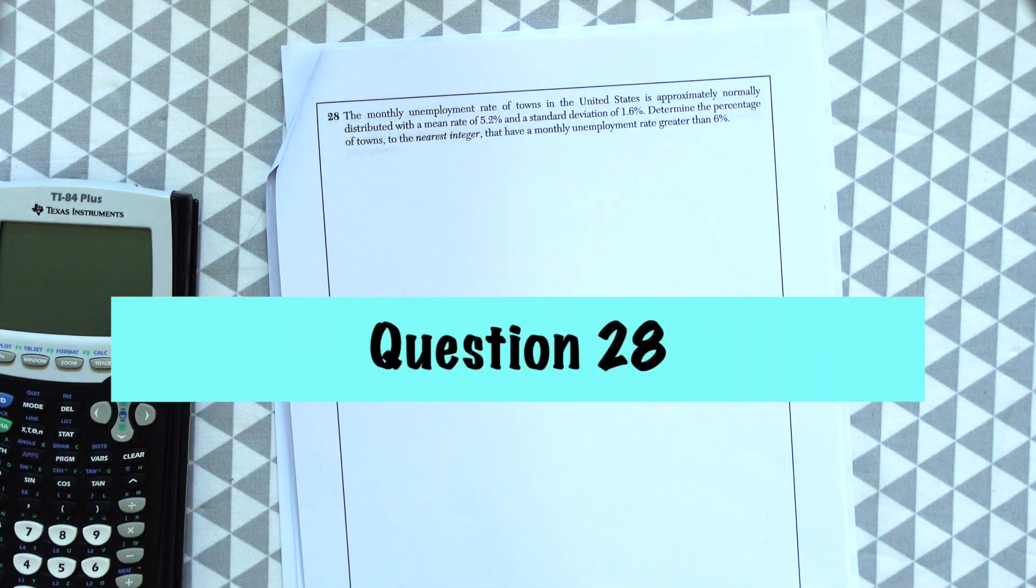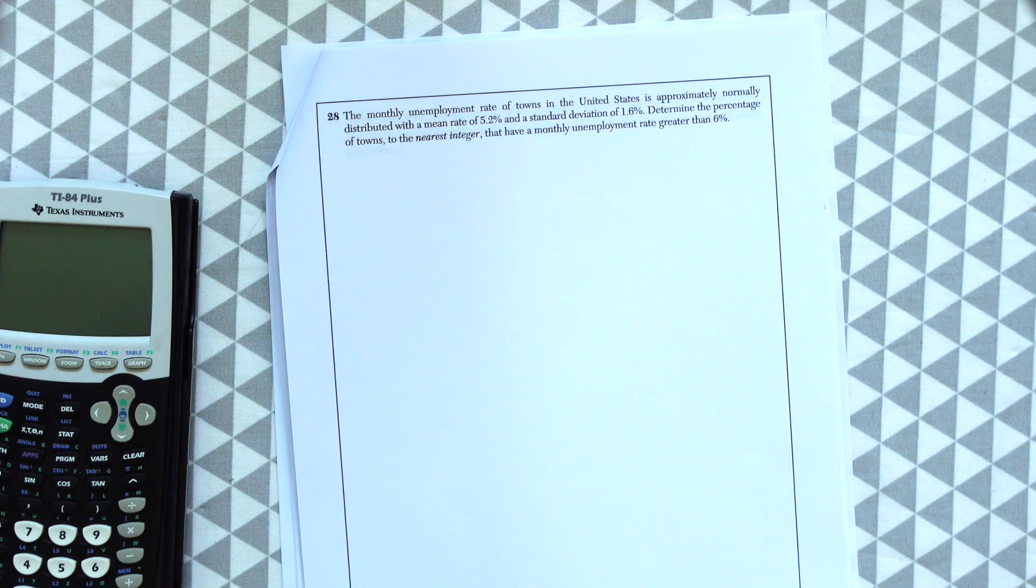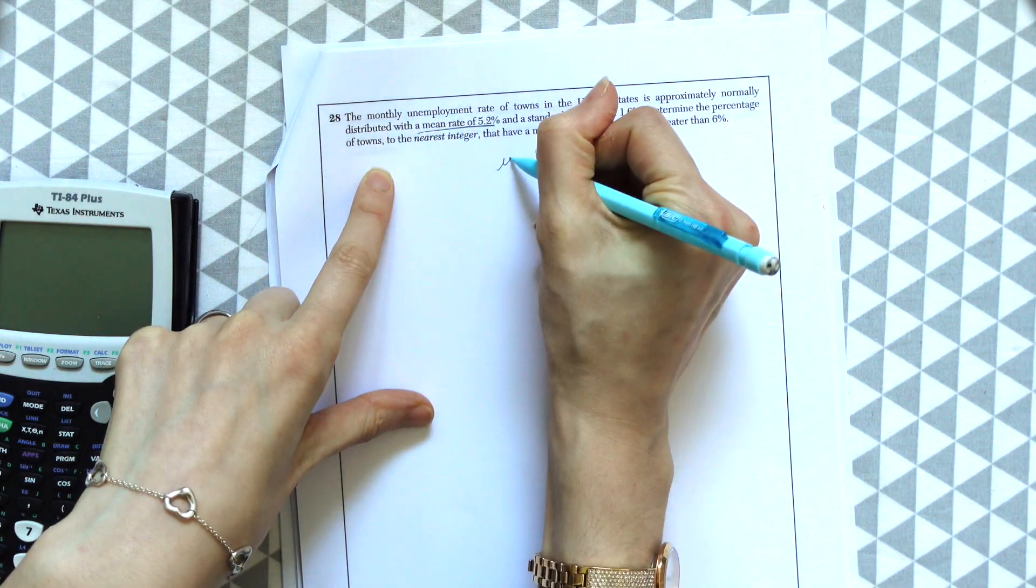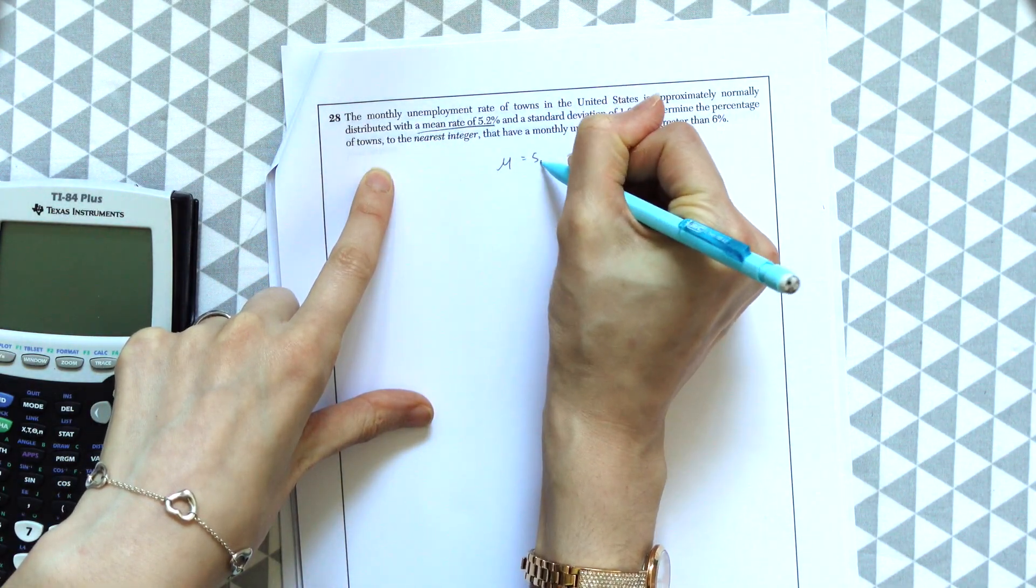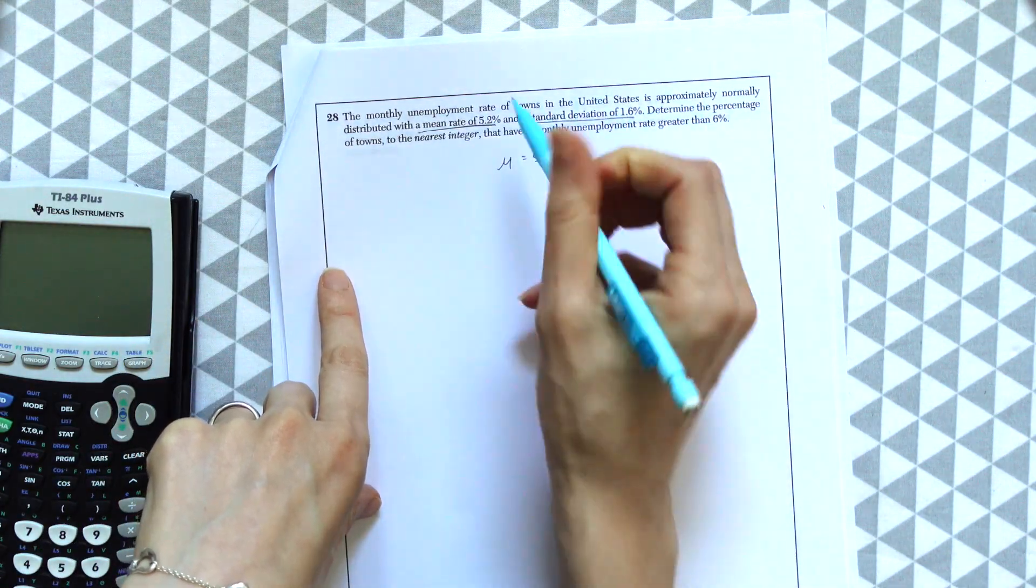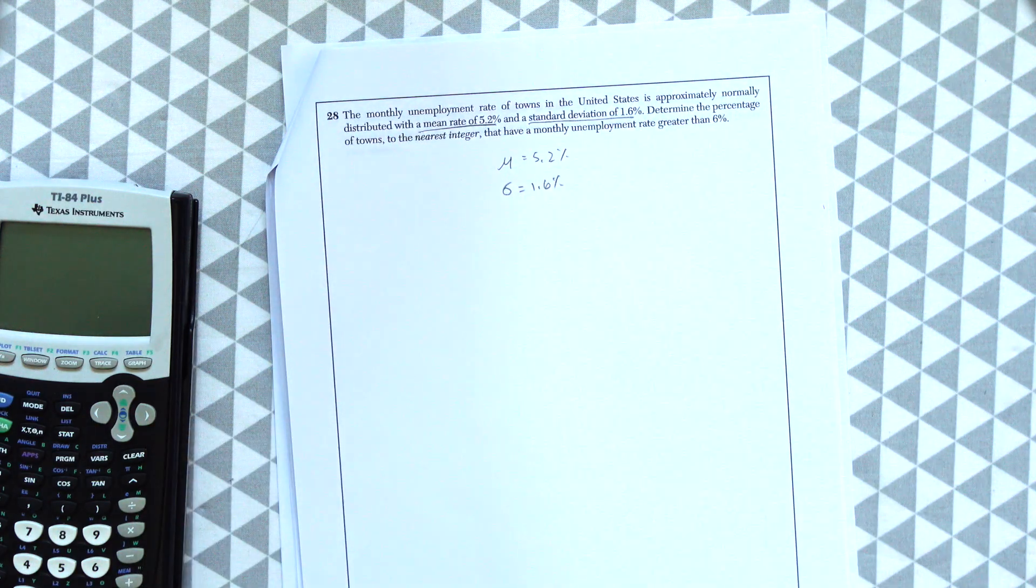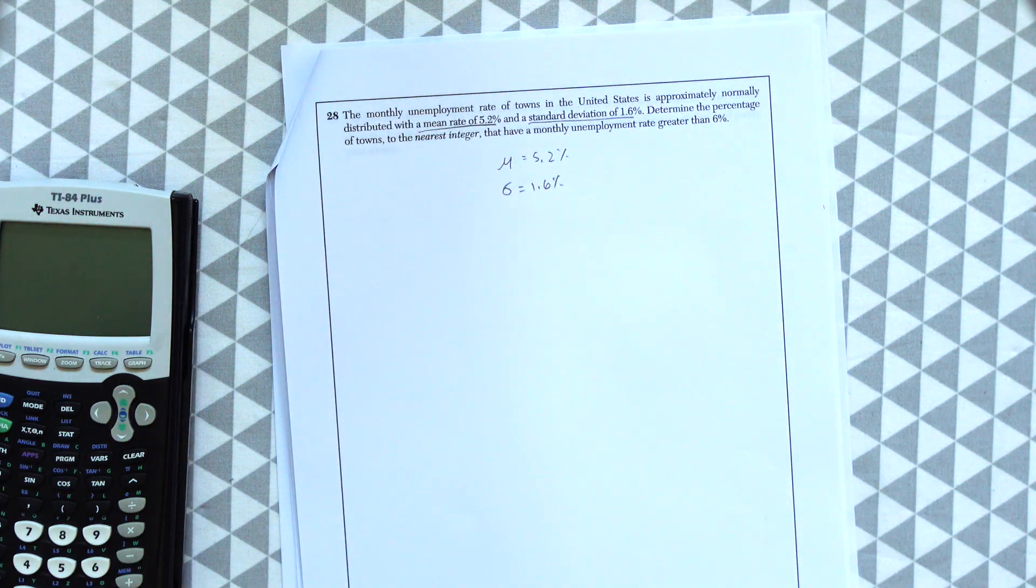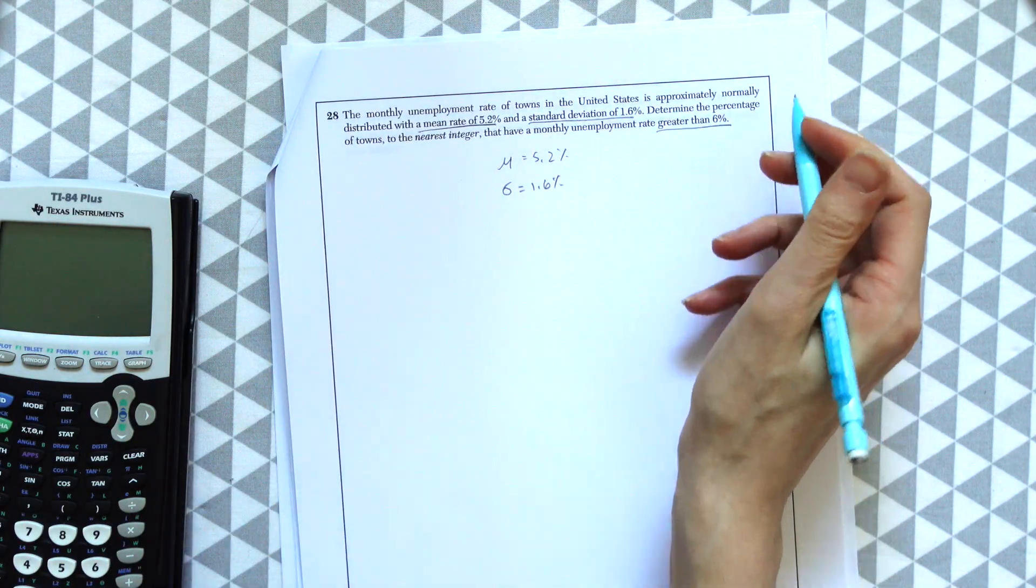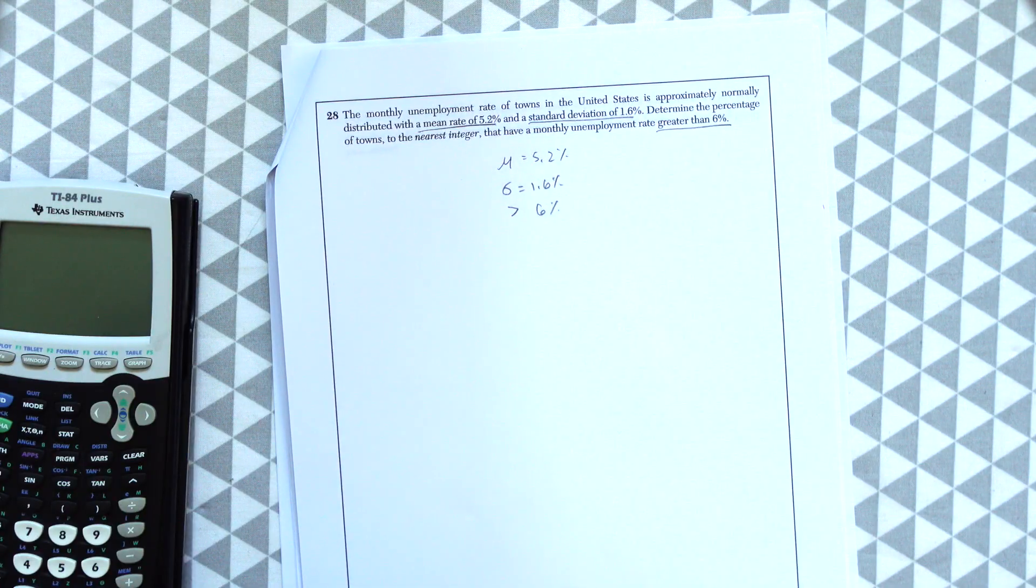Question 28. The monthly unemployment rate of towns in the United States is approximately normally distributed with a mean rate of 5.2%, so we have a mu of 5.2%, and a standard deviation of 1.6%. Determine the percentage of towns to the nearest integer that have a monthly unemployment rate greater than 6%.